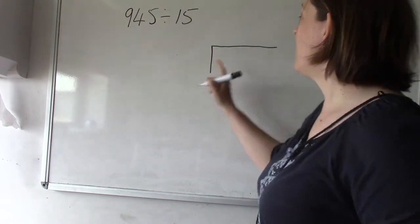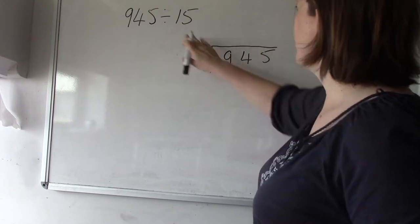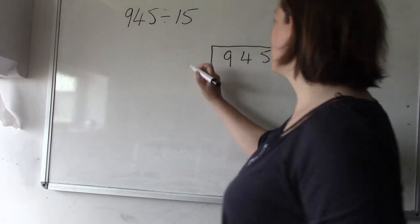So our big number here, 945, that's going to go inside our bus stop there. And the number we're dividing by, 15, goes on the outside.